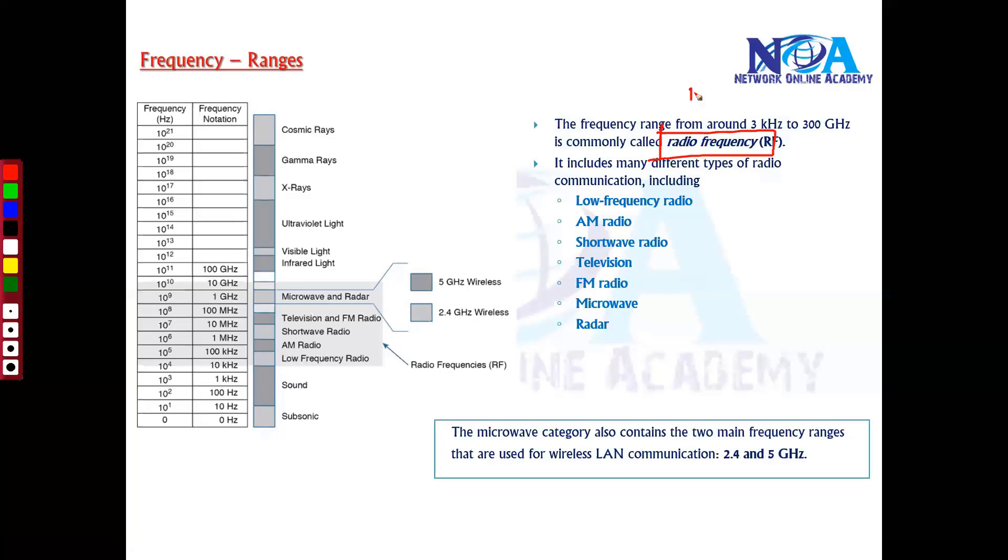These radio frequency signals are used for different types of wireless communications in our network, including low frequency radio, AM radio, shortwave radio, television signals, FM radio signals, microwave, and radar signals. They all fall in this range from 3 kilohertz to 300 gigahertz.